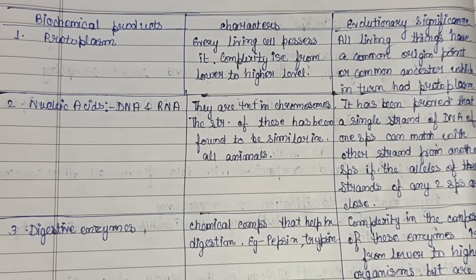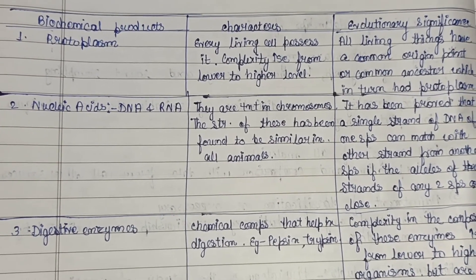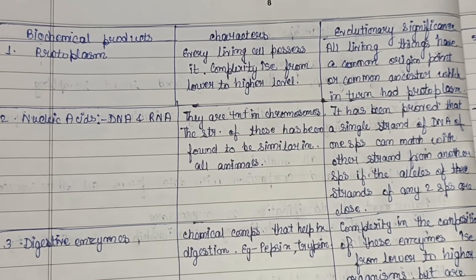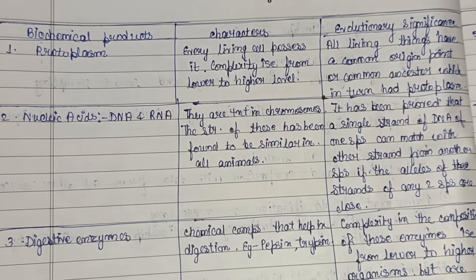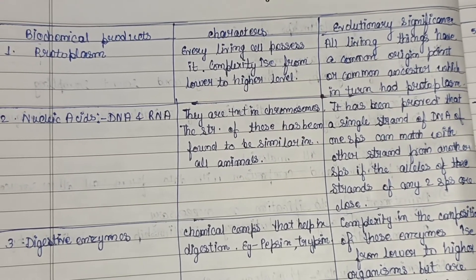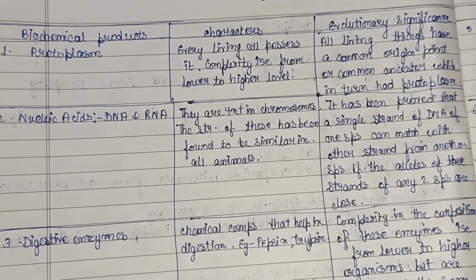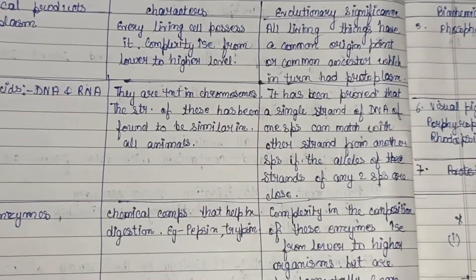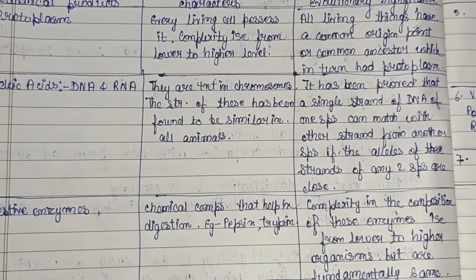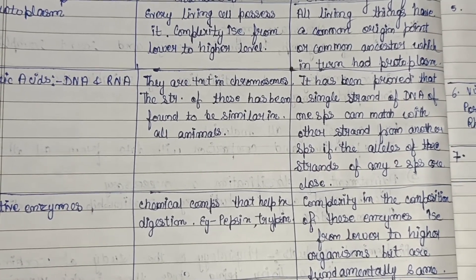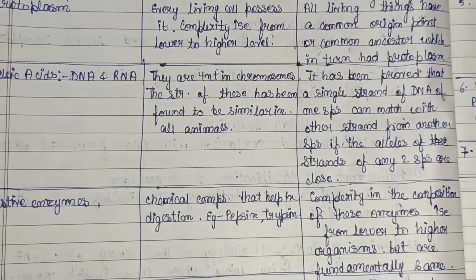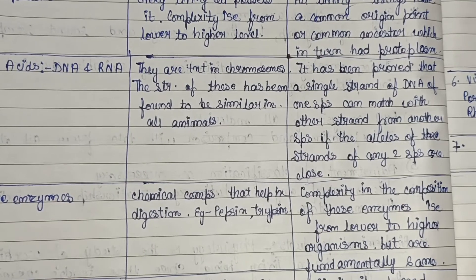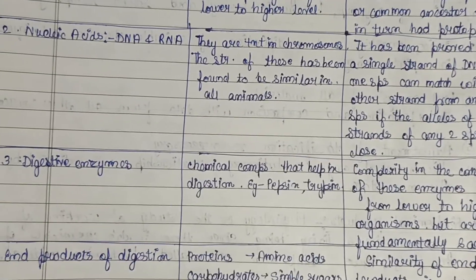Nucleic acids — DNA and RNA — are present in chromosomes, and their structure has been found to be similar in all animals. DNA always has two chains forming a double helix; each chain is made up of nucleotides, each having a pentose sugar, a phosphate group, and nitrogenous bases — adenine, guanine, thymine, and cytosine. RNA contains uracil instead of thymine. Evolutionary significance: a single strand of DNA from one species can match with a strand from another species if their alleles are close.